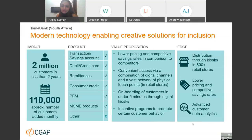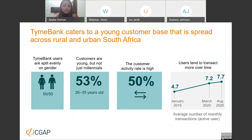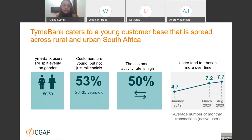TymeBank caters to a young customer base spread across rural and urban South Africa, with a pretty even gender split. In terms of activity rates, at about 50%, these are high compared to other startup banks. The number of transactions users are performing each month has been steadily growing since inception, currently at about eight per month.